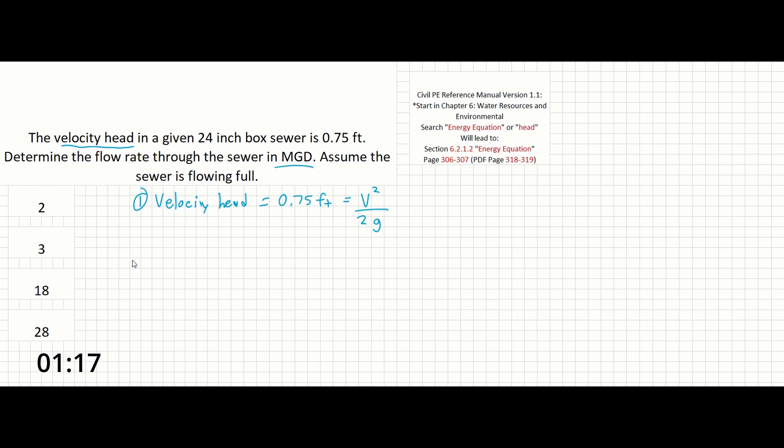Second, since we're going to be looking for flow, we're probably going to need q equals va. And finally, we need it in MGD, so there's a chance we'll have to convert from CFS to MGD. Let's get started.